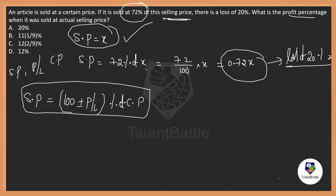SP is equal to 100 plus or minus profit or loss percentage of CP. That means, here SP is 0.72X. It's a loss of 20. If it's loss, we are supposed to subtract. If it is profit, we are going to add. So, loss means I will subtract. 100 minus 20 equals 80 percentage. So, 0.72X is 80 percentage of CP. Then, how much would be X? What will be the percentage?